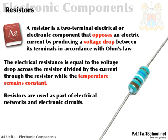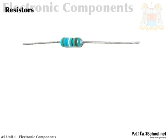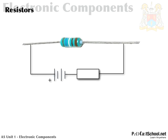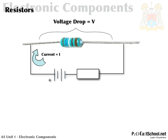Resistors are used as part of electrical networks and electronic circuits. Looking at this resistor circuit, I've added in the symbol for a resistor and a battery. The long side of the symbol is always the plus — I remember that because it takes more lines to make a plus. So this is the positive side, this is the negative side, and there's going to be a current — remember current is denoted by I — flowing around this very simple circuit. Because of Ohm's law, we know there's going to be a voltage drop across the resistor.